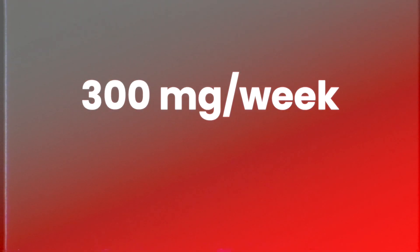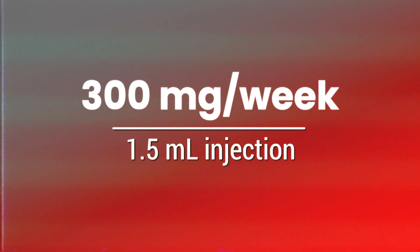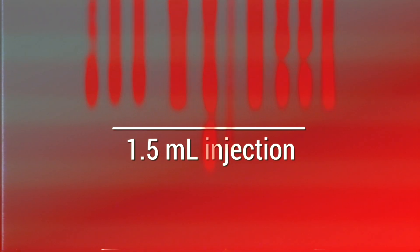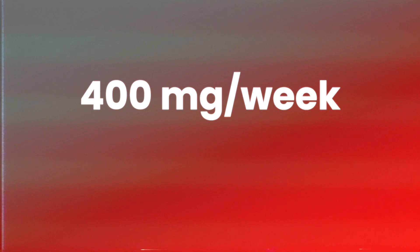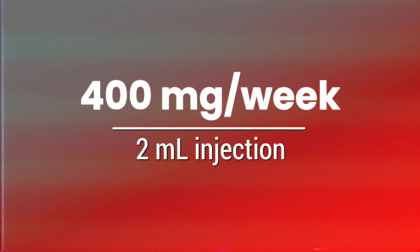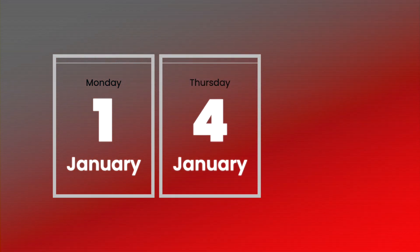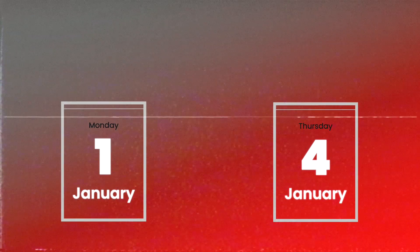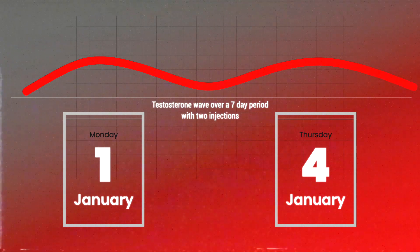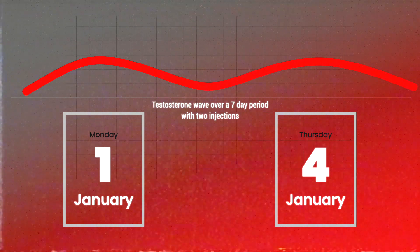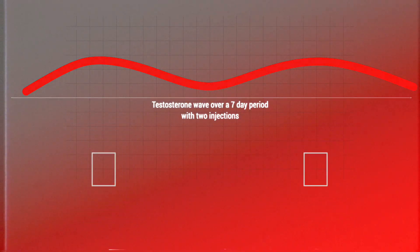If you're prescribed a 300 milligram dosage for the week, then you're injecting yourself with 1.5 mL of testosterone, and 400 milligrams equals 2 mL to inject. It's important to note that our doctors will recommend that the majority of these larger doses be split into two separate injections during the week. This way, you'll feel the beneficial effects of your treatment through a 7-day period, rather than just the first half of the week.